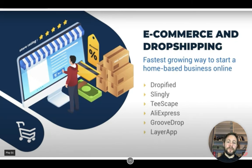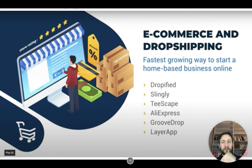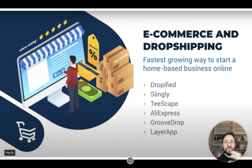They've built e-commerce, drop shipping, and fulfillment platforms within GrooveKart — it's the fastest growing way to start a home-based business online. You've got Dropified, Slingly, and Teescape, which is a whole app within GrooveKart where you can make fantastic t-shirt designs and drop them into your store. You could even run Facebook ads straight to that product and people will buy, it's printed on demand and sent to your customer. It also links fully with AliExpress for drop shipping, and there's LayerApp where you can take products like trainers and apply funky custom designs.